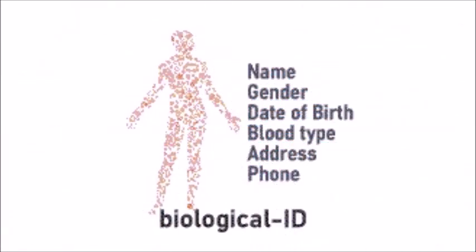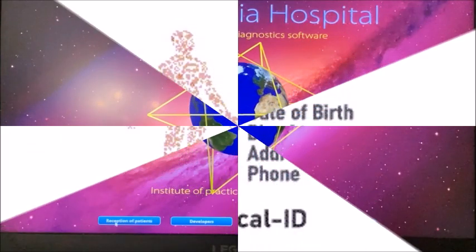Required information that determines your Quantum ID are name, gender, date of birth, blood type, address, and phone.